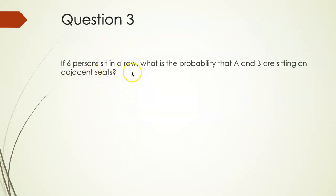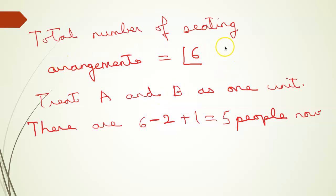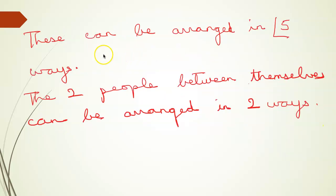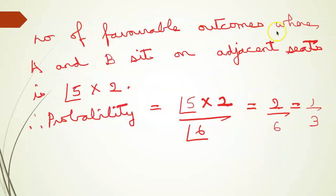Question 3: If 6 persons sit in a row, what is the probability that A and B are sitting on adjacent seats? Total number of seating arrangements is 6 factorial. Treating A and B as 1 unit, we have 5 people who can be arranged in 5 factorial ways. A and B between themselves can be arranged in 2 ways. So favorable outcomes are 5 factorial into 2, and probability is 5 factorial into 2 by 6 factorial, which equals 1 by 3.